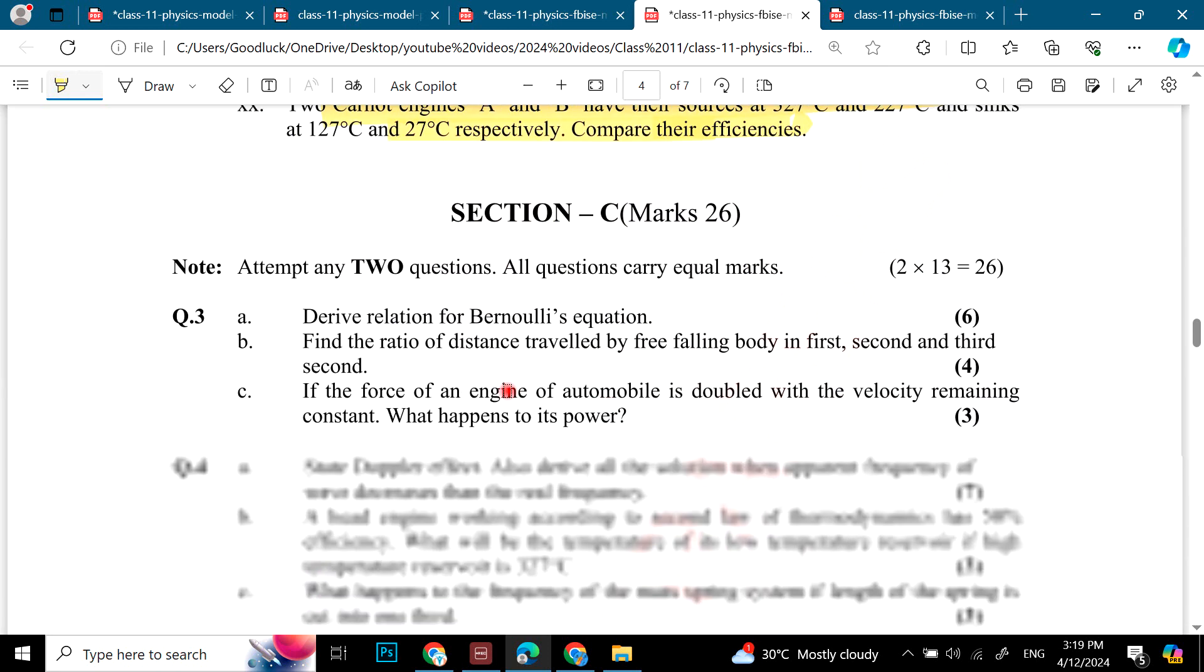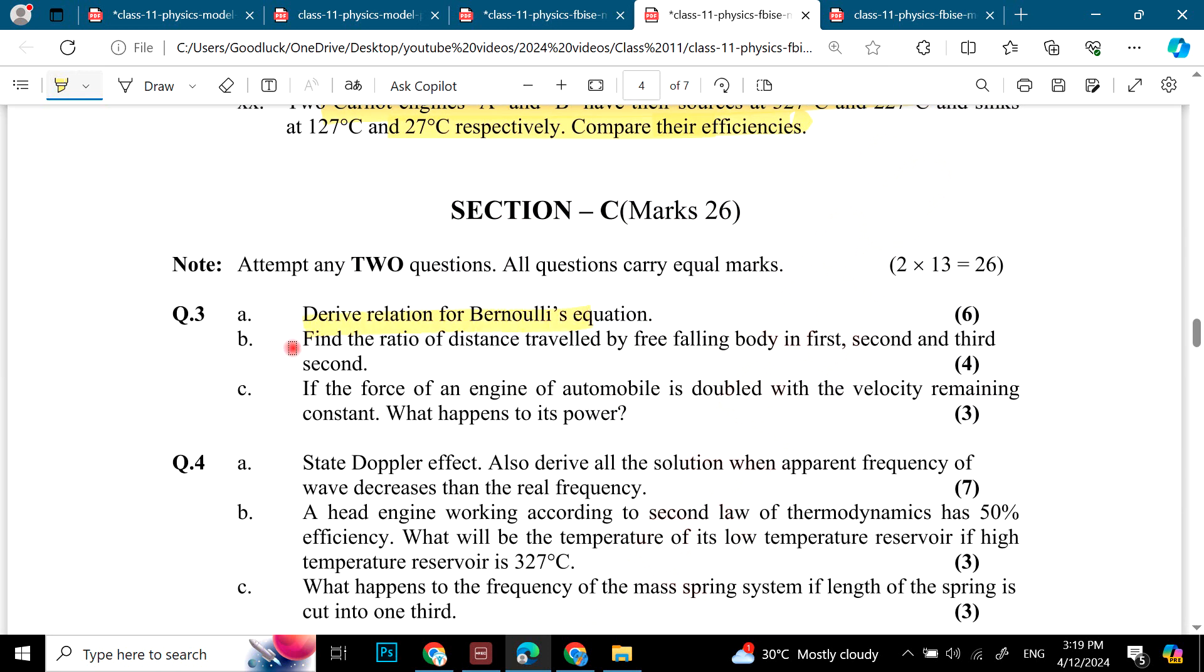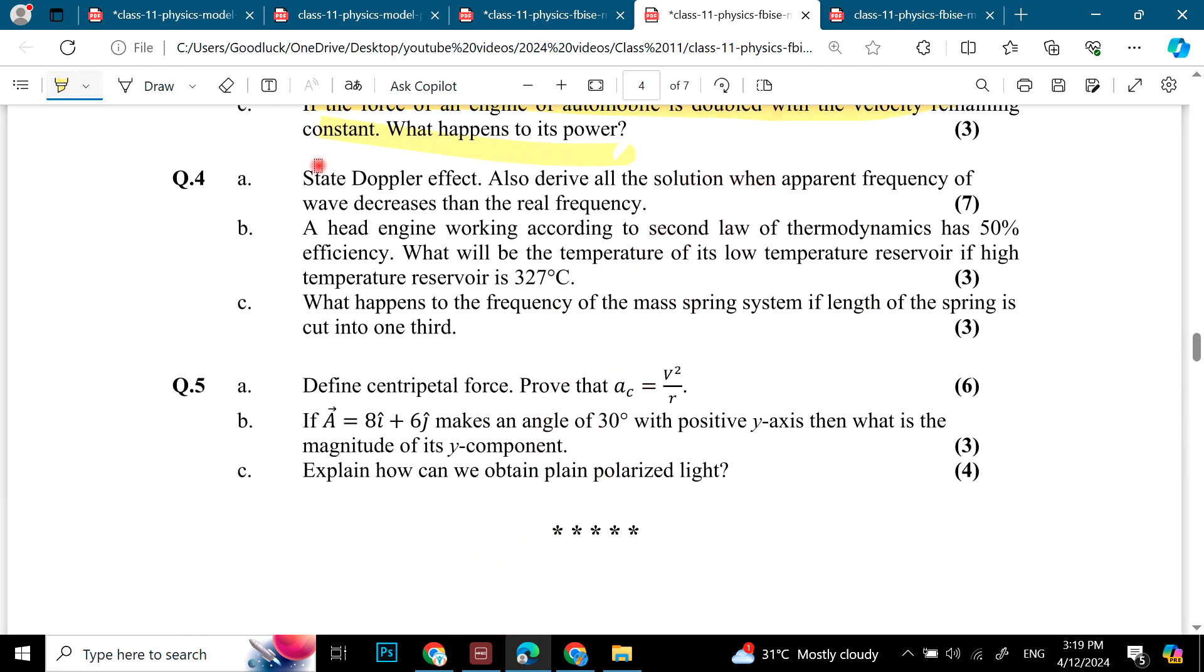Calculate well, Carnot engine related, a question is efficiency calculate. Bernoulli equation. Ratio between distance by freely falling body in first, second and third second. If the force of engine of automobile is double with the velocity remaining constant, what happens to its power? Doppler effect, Doppler effect numerical. What happened to the mass-spring system if length is cut into one third? Centripetal force, derive. A numerical second chapter and polarized question, polarized question in the first paper.